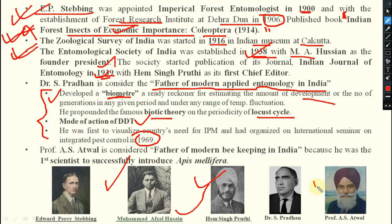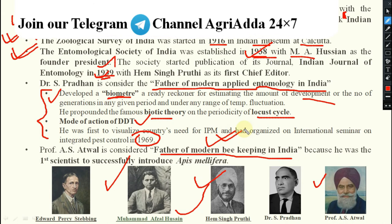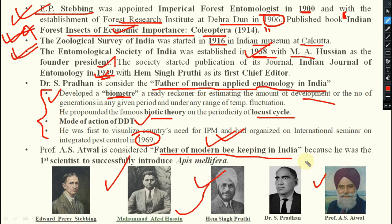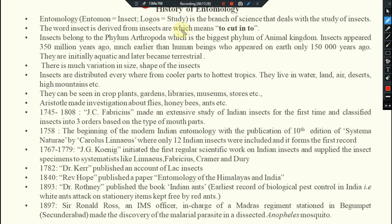Professor Atwal is considered the father of modern beekeeping in India because he was the first scientist to successfully introduce Apis mellifera into India. It was a European bee, but he introduced it by crossing with Apis mellifera indica. That is why he is regarded as the father of modern beekeeping in India. So: Dr. S. Pradhan — father of modern applied entomology; Prof. Atwal — father of modern beekeeping in India.